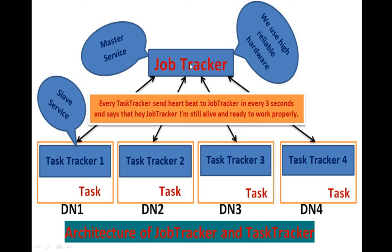The task tracker resides on the data node and is a slave service, whereas the job tracker is a master service. More than one task tracker can exist in a cluster — on data node 1, 2, 3, and 4 there is one task tracker each. We always put the task tracker and data node on the same machine to avoid network congestion, because tasks reside on the data node.